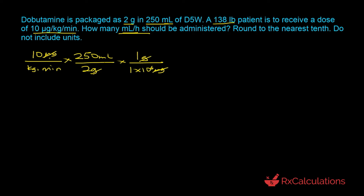If you are tracking your units, you are now in milliliters per kilogram per minute. We need to get rid of the kilograms, so we multiply by the patient's weight of 138 pounds. Since pounds and kilograms are different units, we convert using 2.2 pounds equals 1 kilogram. The pounds cancel out, the kilograms cancel out, and you are now in milliliters per minute. We then convert minutes to hours using 60 minutes equals 1 hour.